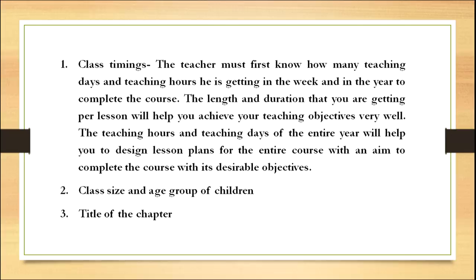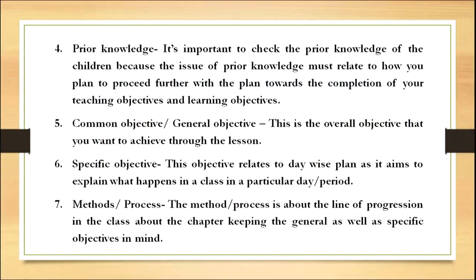The second component is class size and age group of the children. The third is title of the chapter. The fourth is prior knowledge — it is important to check the prior knowledge of the children because it must relate to how you plan to proceed further toward the completion of teaching and learning objectives. The fifth is the general objective, which is the overall objective you want to achieve through the lesson. The sixth is specific objectives, which relate to the day-wise plan explaining what happens in a class on a particular day or period. The seventh is methods or process — the line of progression in the class about the chapter, keeping the general and specific objectives in mind.